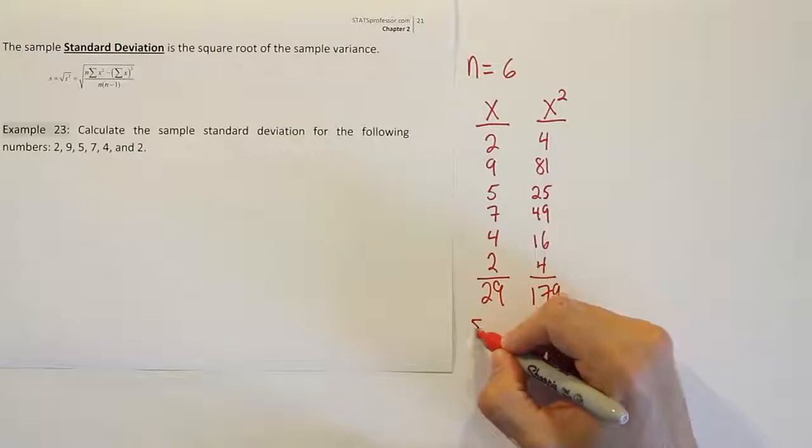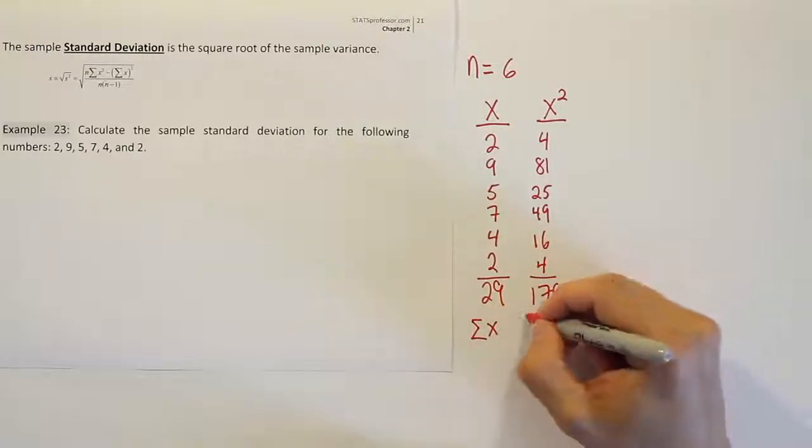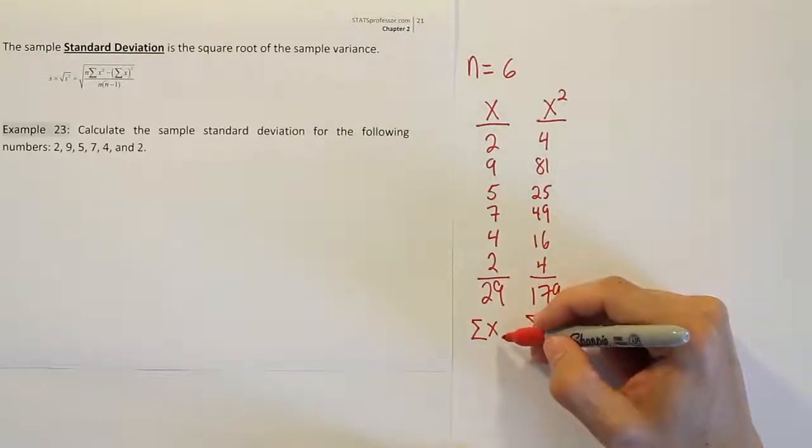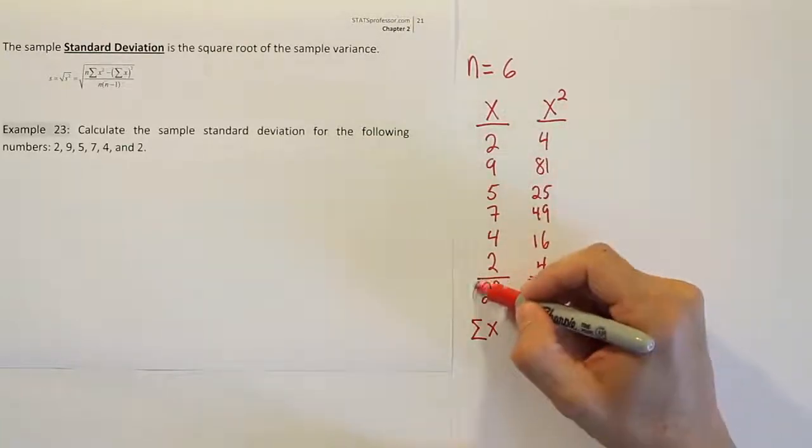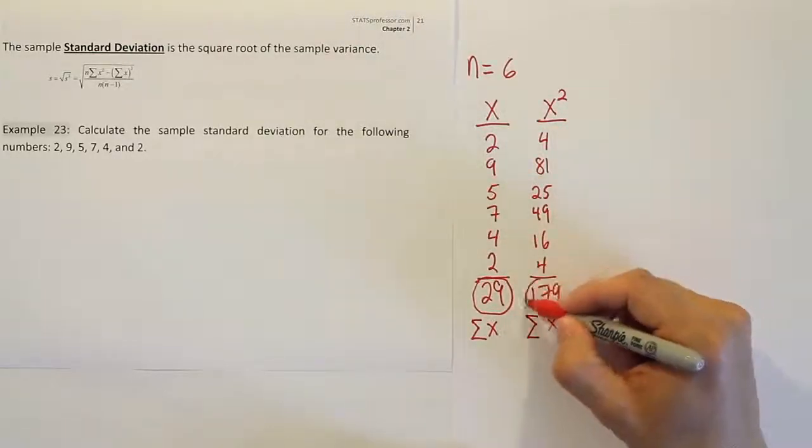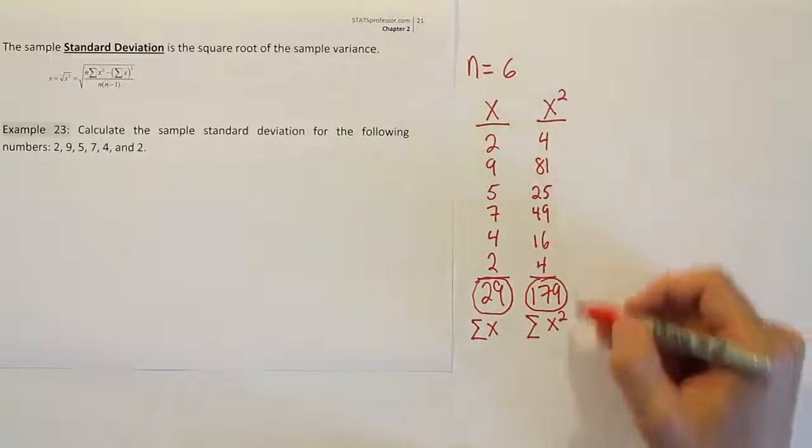We'll call this the summation of x and we'll call this the summation of x squared. The reason why I'm calling this the summation of x is because this number 29 came from summing the x column, and this number 179 came from summing the x squared column.